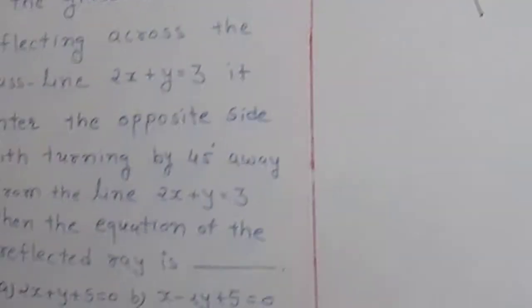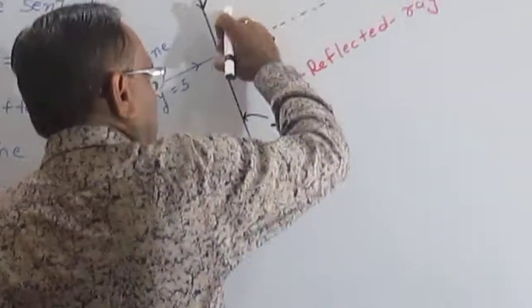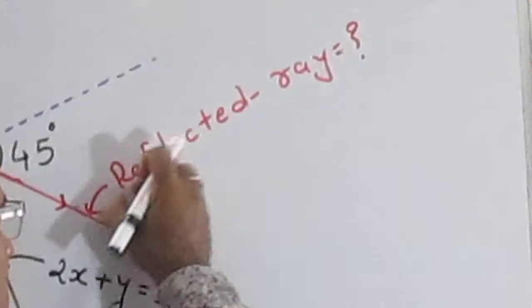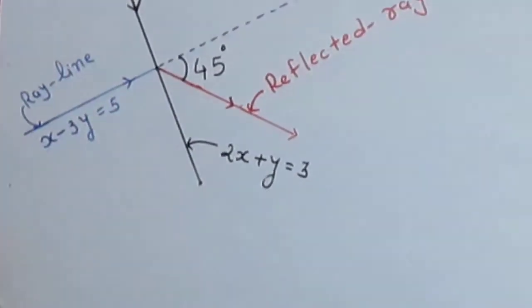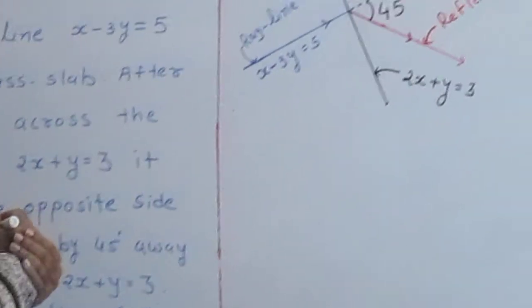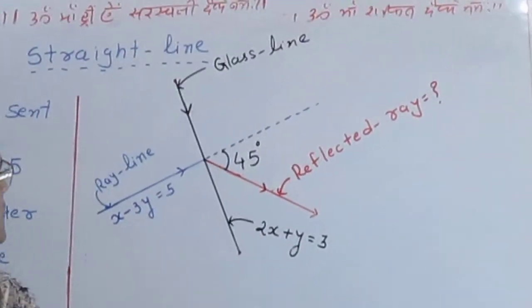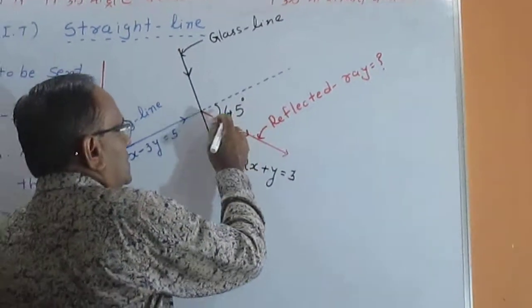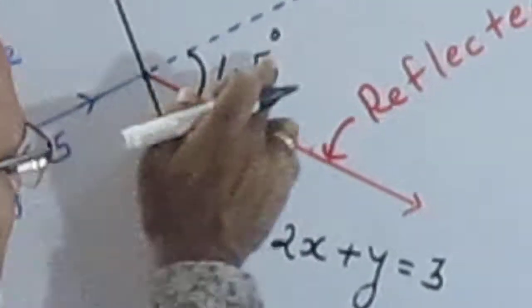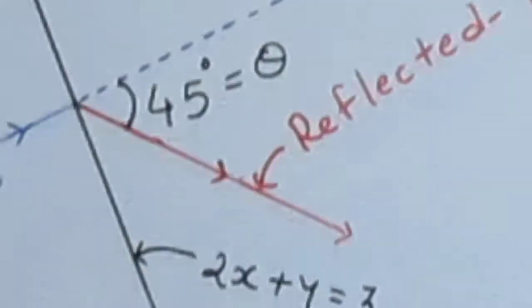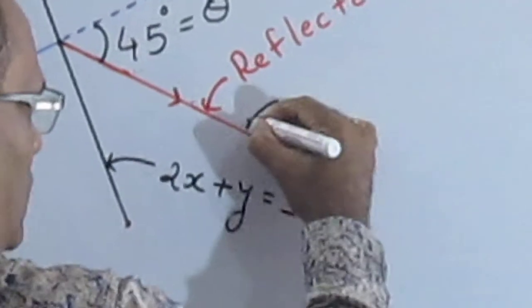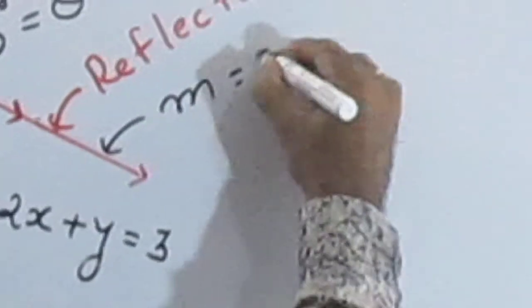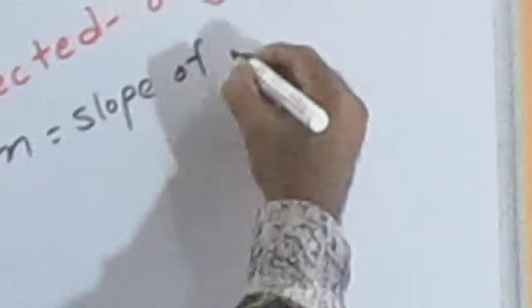From the line 2x plus y is equal to 3, this is the glass line. What is the equation of the reflected ray? We need to find the equation of the reflected ray line, so we consider the reflected ray line also. I solve this question. First, consider theta is given — suppose theta is 45 degrees. Consider here the slope of the reflected line is m.